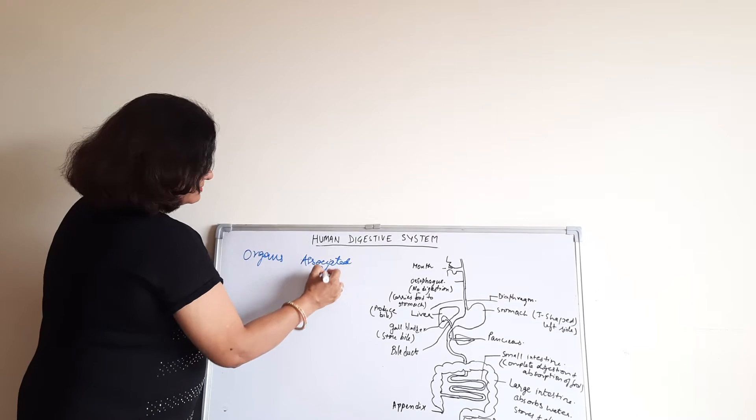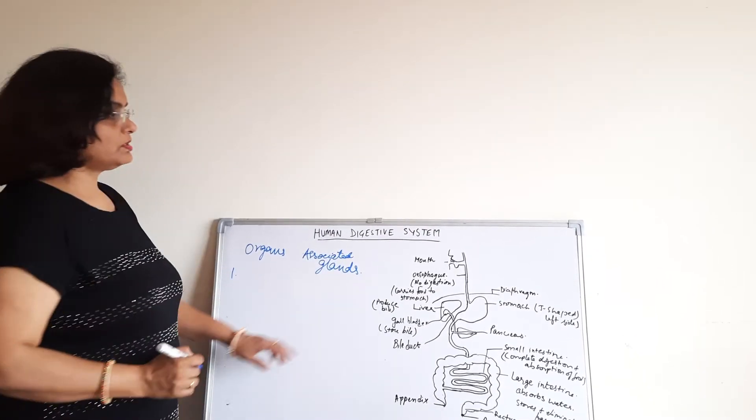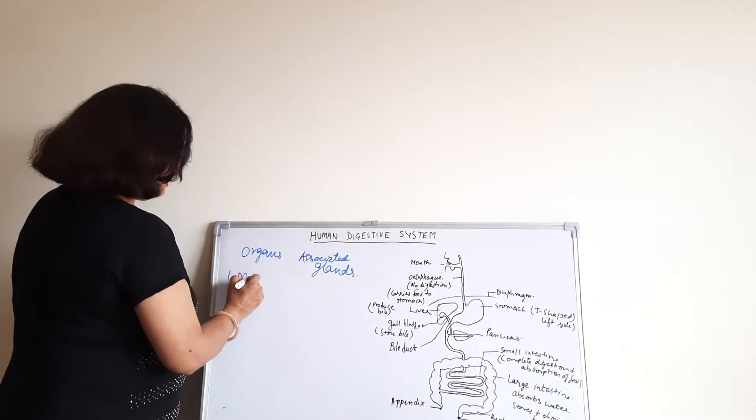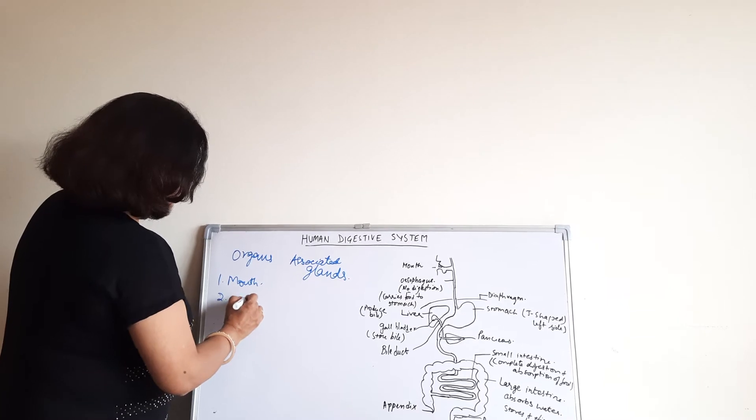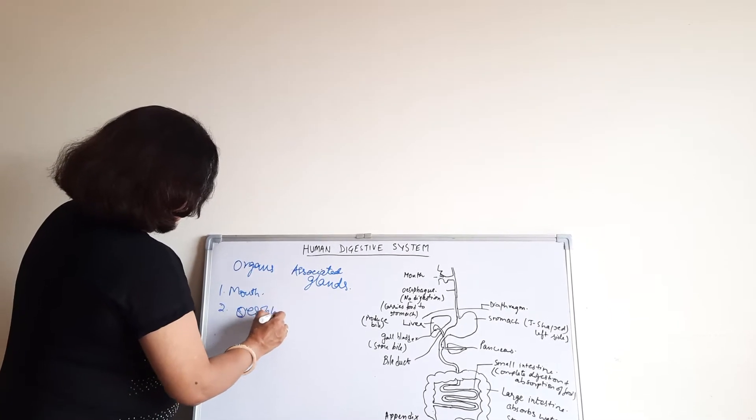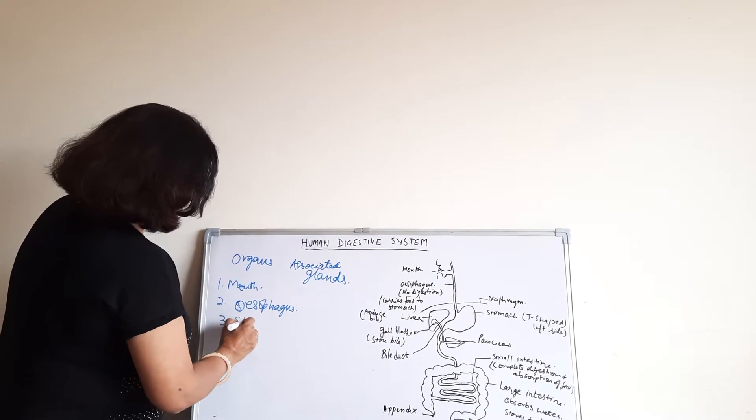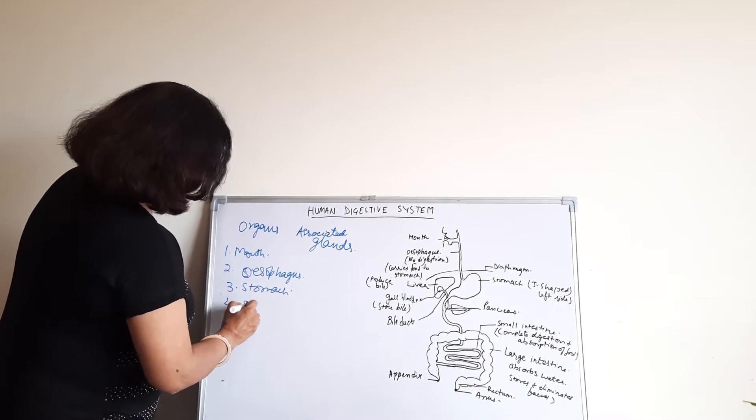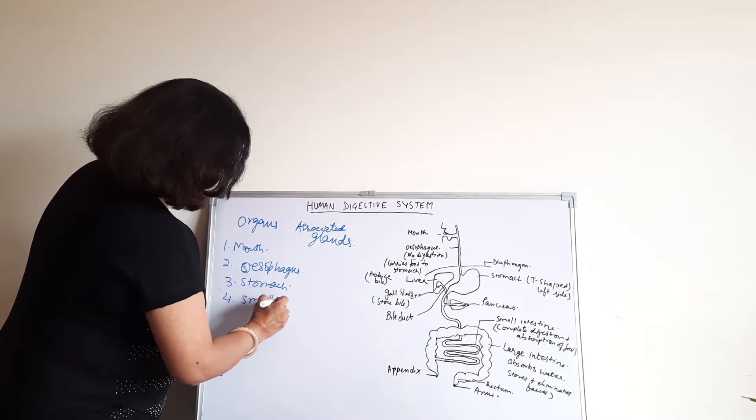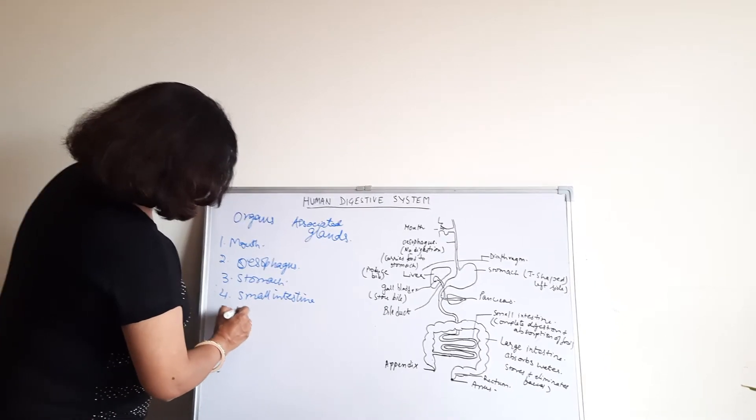Now, this is the organs. Mouth, then esophagus, then stomach, small intestine, and large intestine.